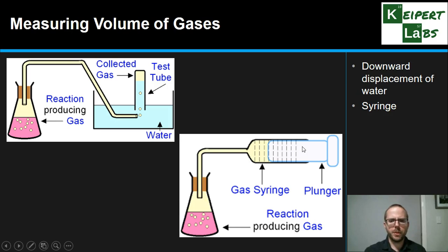So rather than having the water trough, you connect up a syringe with a plunger directly to a reaction vessel that's producing this gas. It goes up into the tube, it pushes into the syringe, which pushes the plunger out.